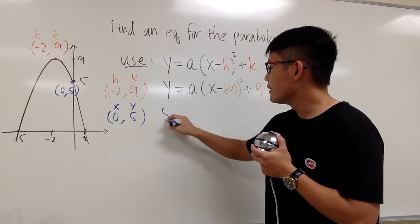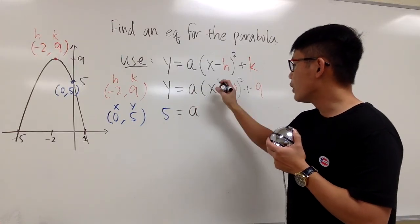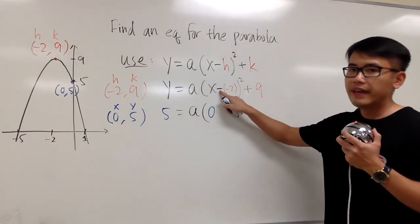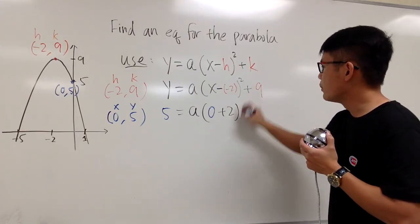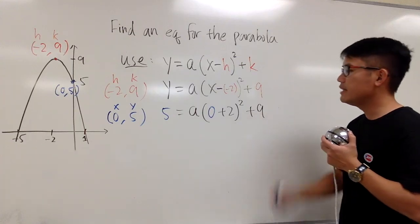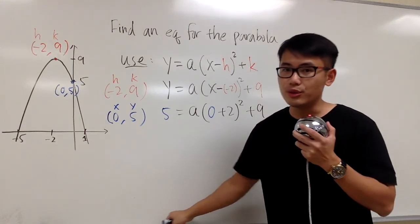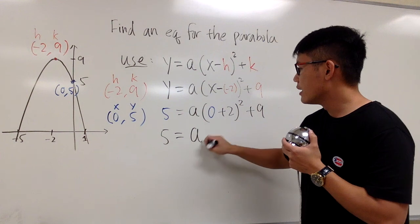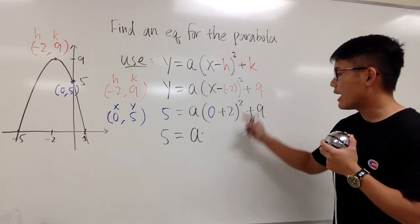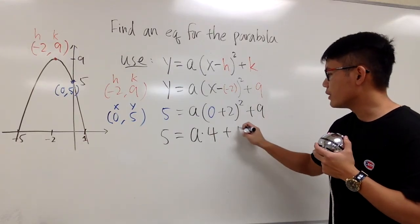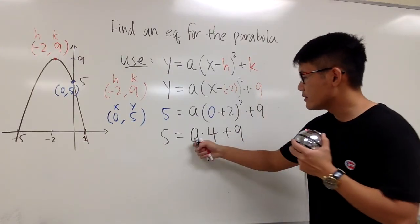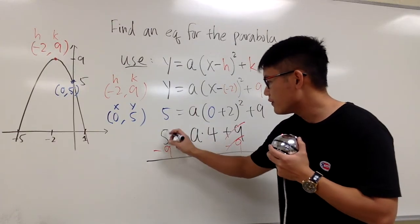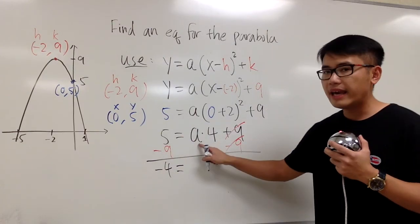Y is 5, and this is equal to a — we still don't know. I'll open the parentheses. This is x, which is 0. And you see, this is negative negative 2, so it's going to be a plus 2. We have that squared, and then we add a 9 at the end. This is 5, equal to a times — 0 plus 2 is just 2 — square that, we have 4, and we add a 9 to it. We just have to solve for a right here.